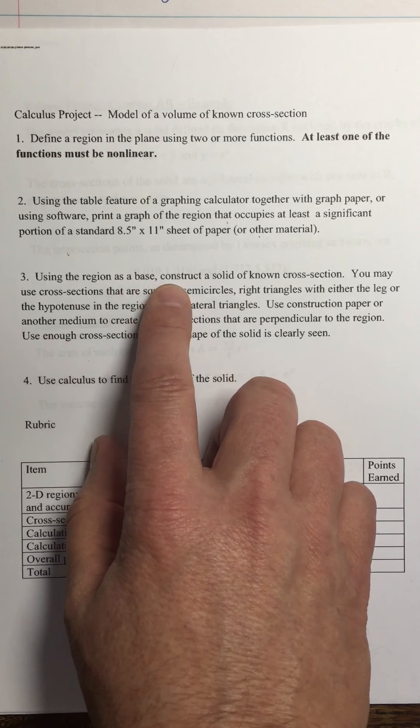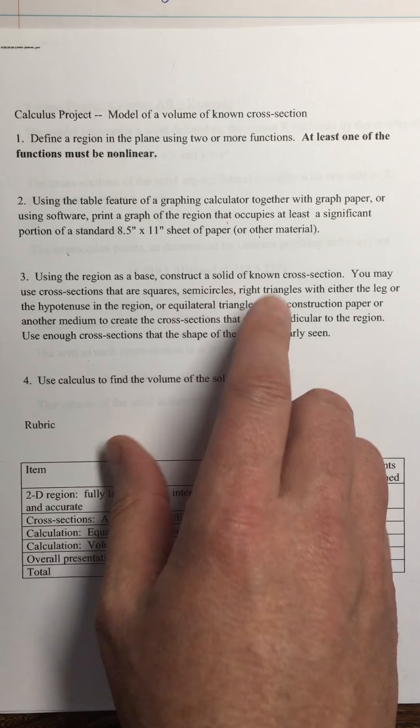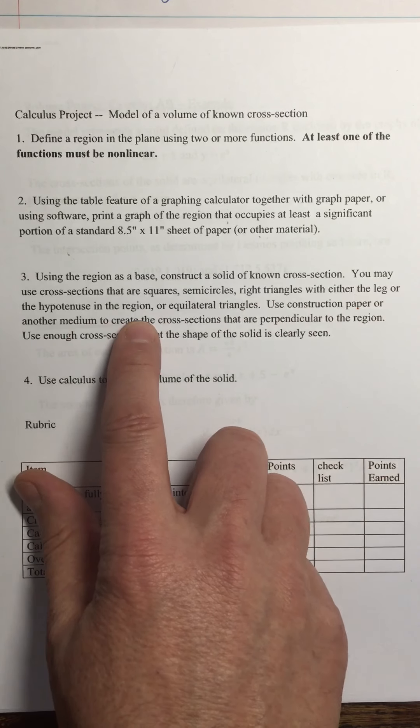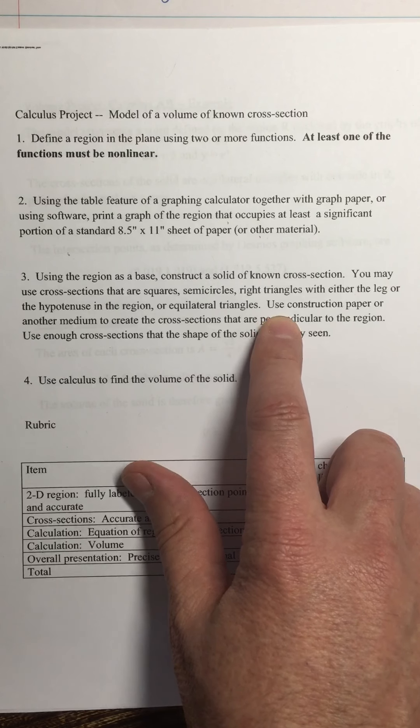Using this region as a base, we're going to construct a solid of known cross-section. You may use cross-sections that are squares, semicircles, right triangles with either leg in the hypotenuse, or equilateral triangles.